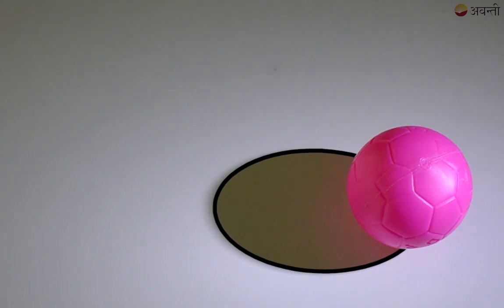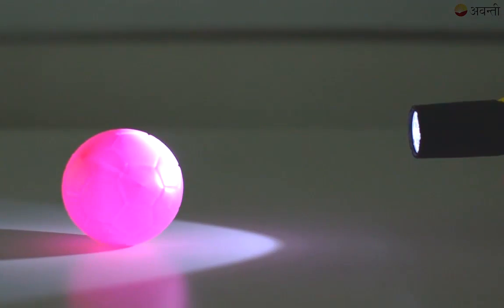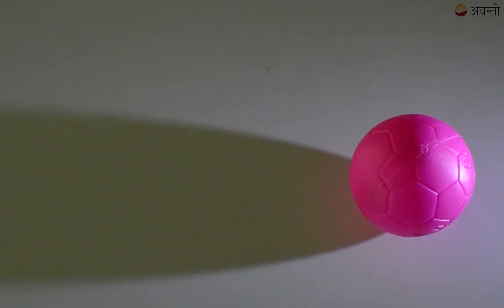Now I have tilted the torch further and I have reached a particular point such that the height of my ball is at the same level as my torch. Now at this point, the shape I am getting is like a U shape and this shape is called a parabola.